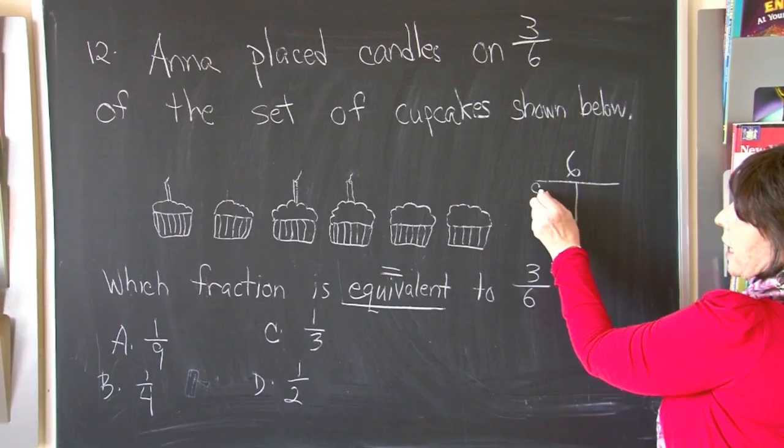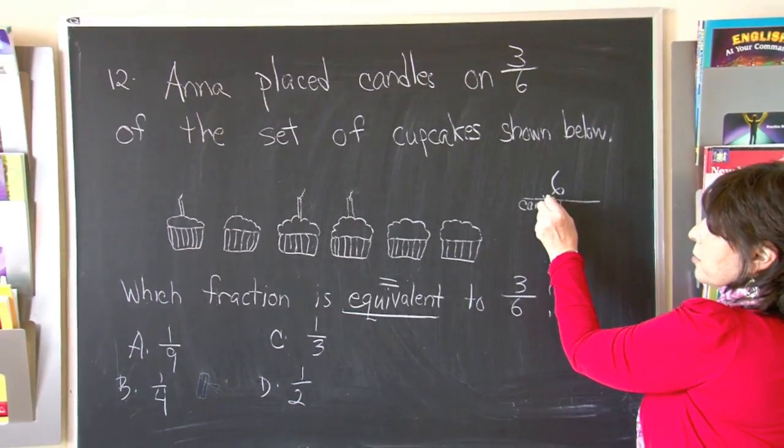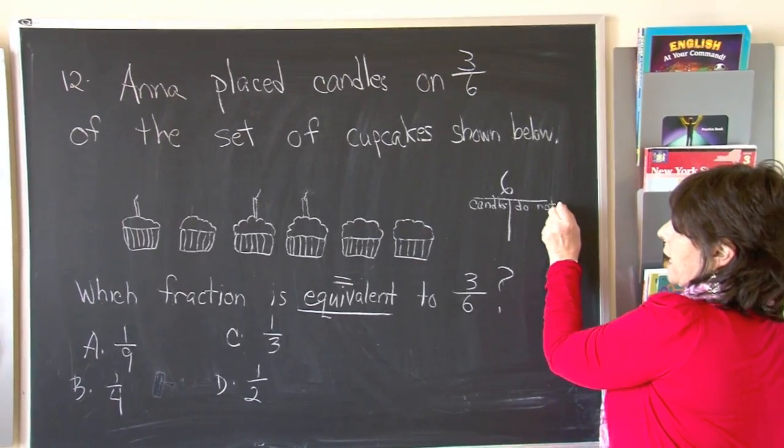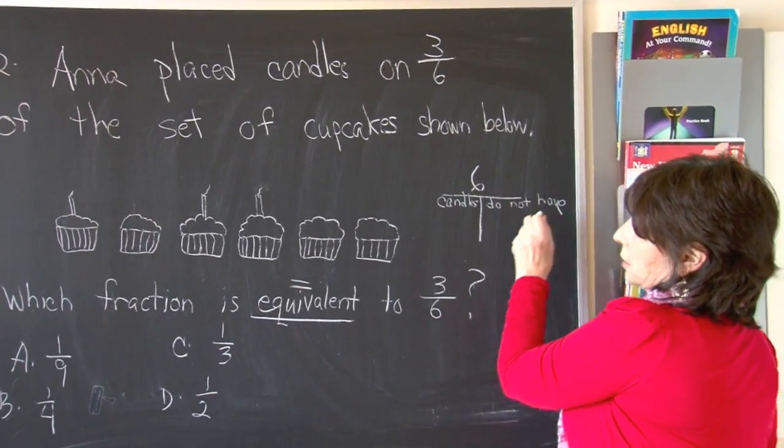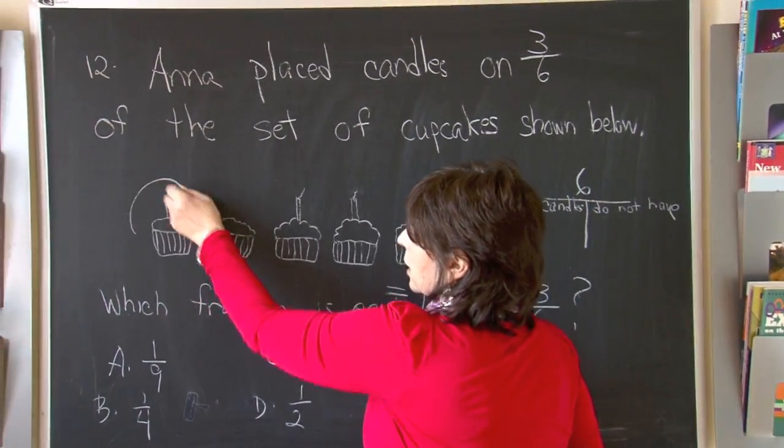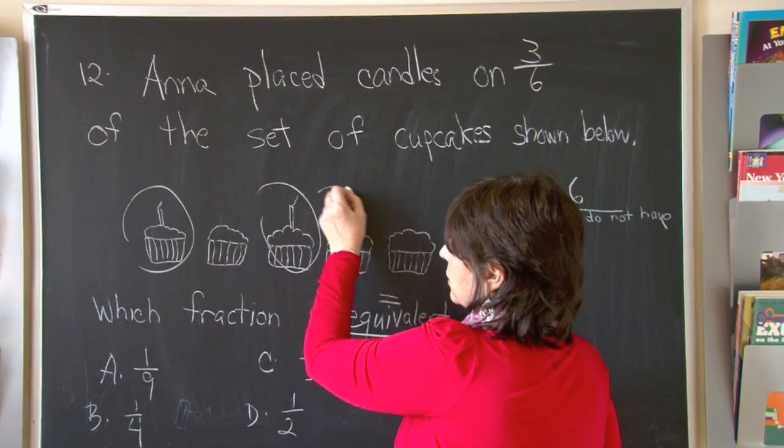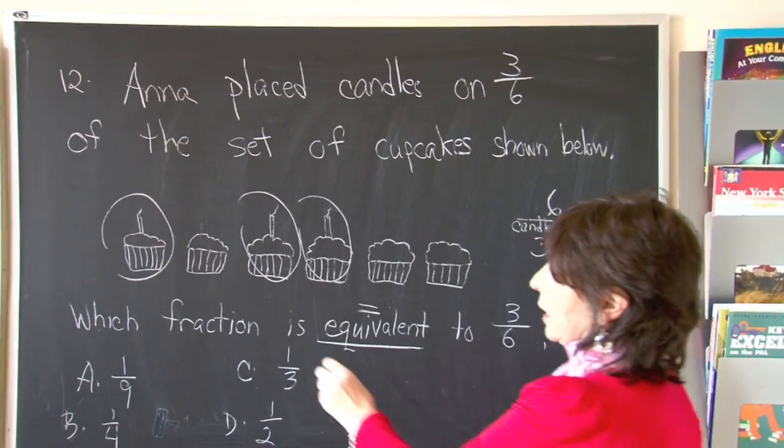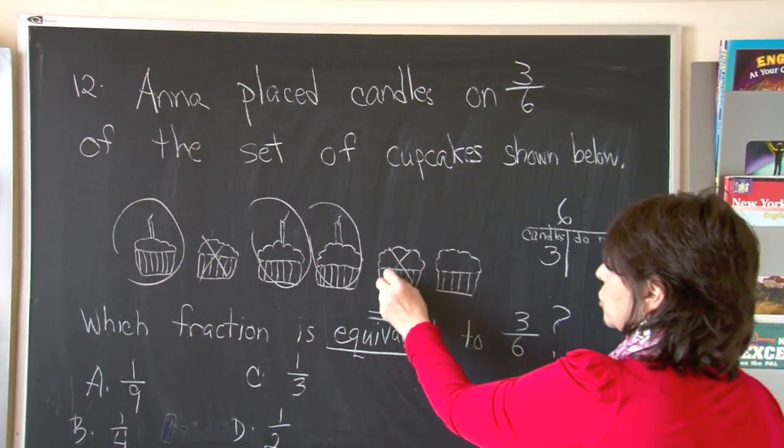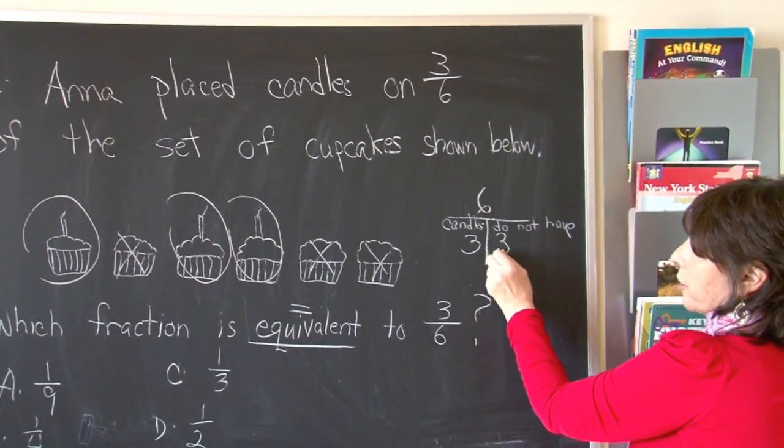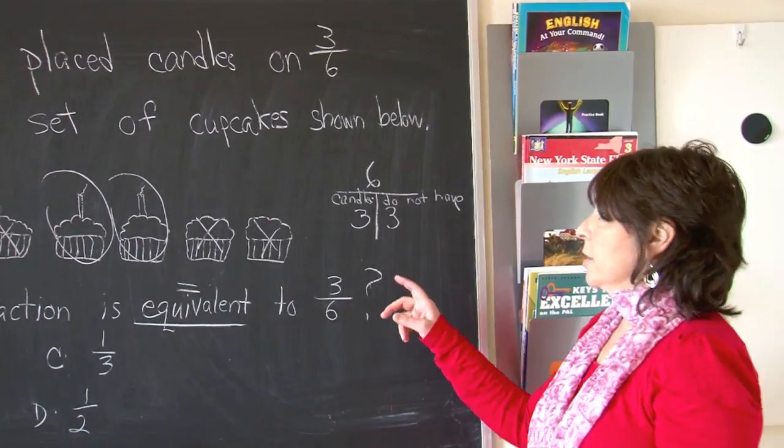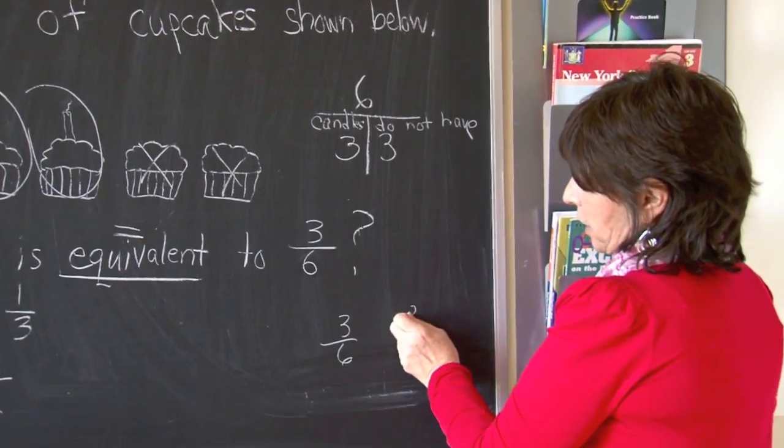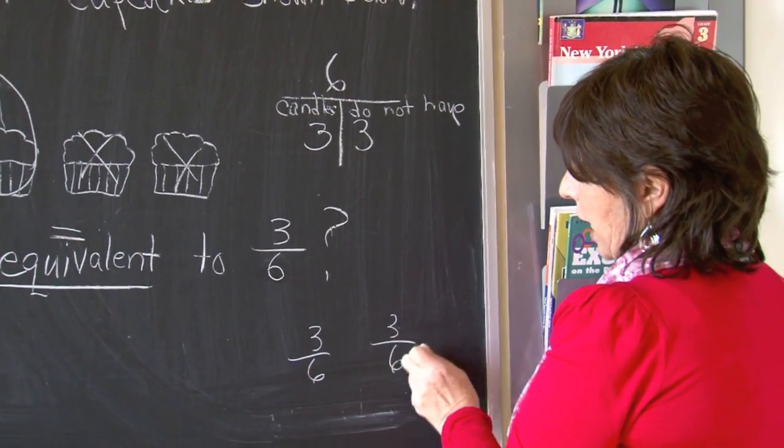Let's see how many have candles and how many do not have candles. One cupcake, two cupcakes, three have candles. How many do not? One, two, three. Three do not have. So, three out of six have. Three out of six do not have.